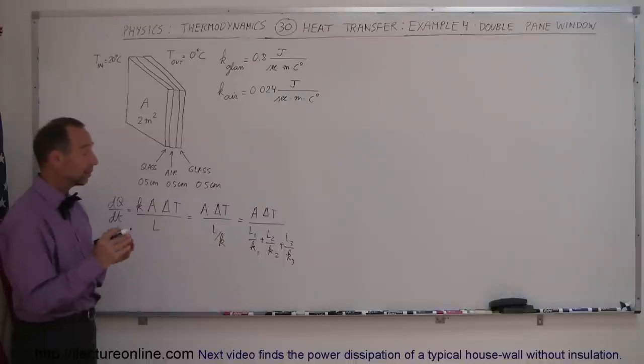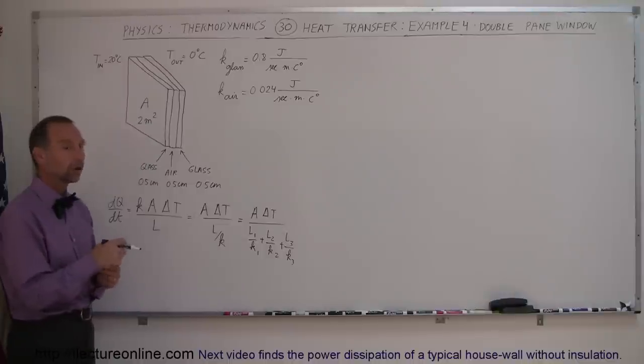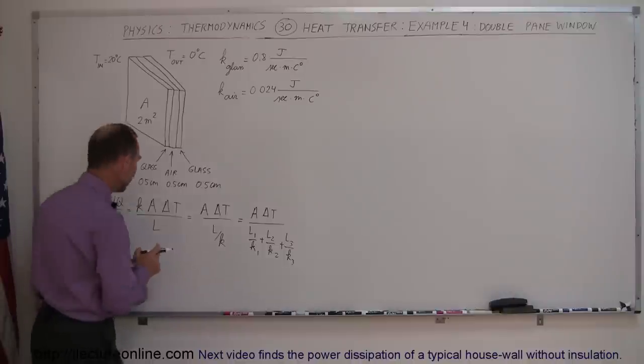As we will see later on, the L over k is a factor that is actually used in building materials, and that's usually called the R rating. The rating for the conductivity versus thickness of the layer. Now that we have the equation, let's plug in all the values.